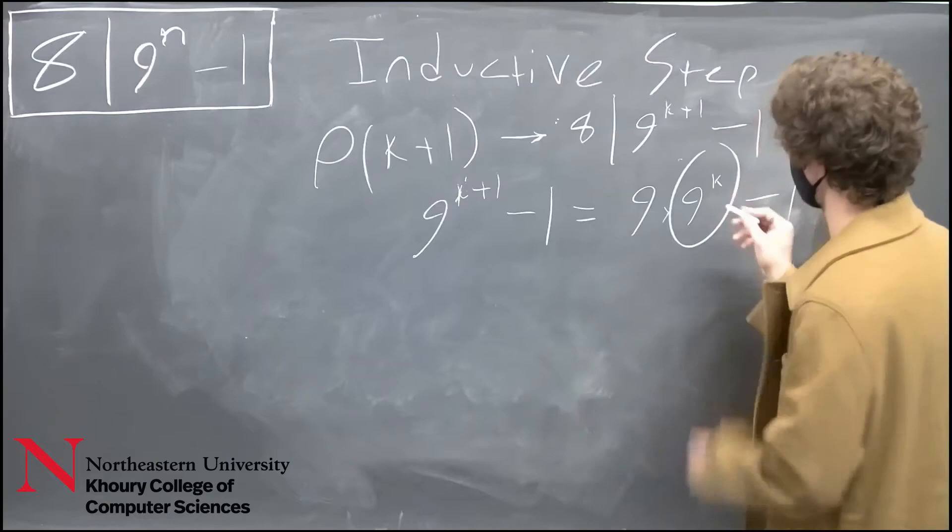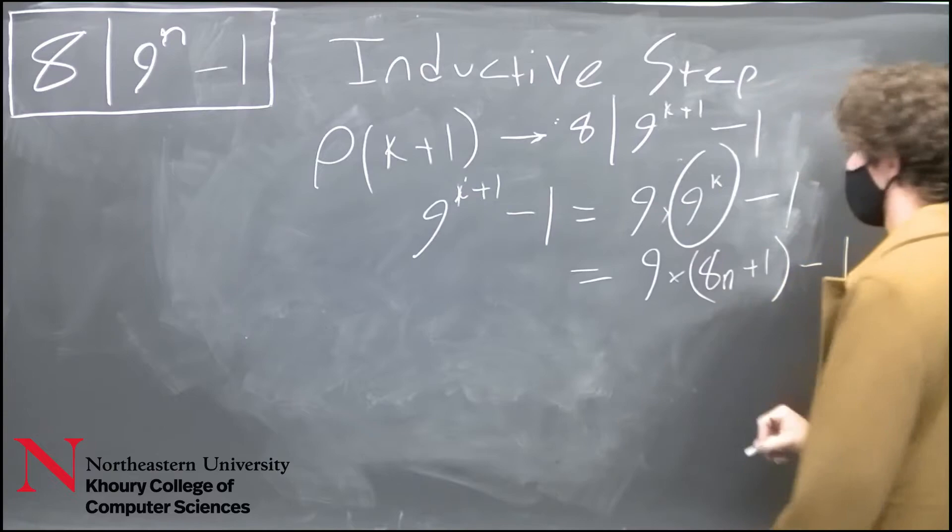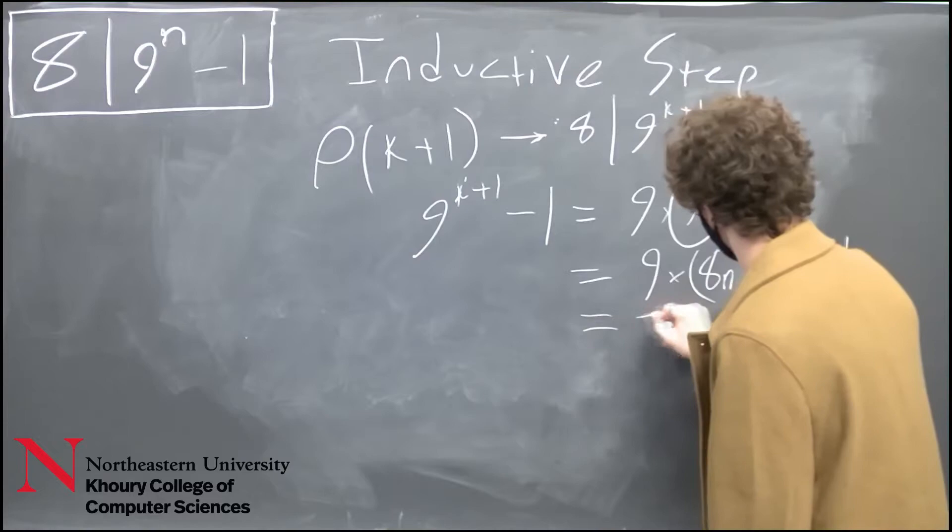Substituting this for 8n plus 1, we get 9 times the quantity 8n plus 1 minus 1. Now if we distribute the 9, that is equivalent to 72n plus 9 minus 1.